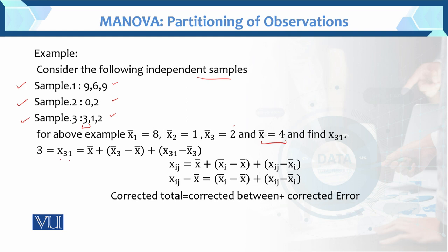Basically, we need to find the sum of squares of deviation from mean. The general case is: xᵢⱼ = x̄ + (x̄ᵢ − x̄) + (xᵢⱼ − x̄ᵢ). So for the general case, xᵢⱼ equals x̄, plus x̄ᵢ minus x̄, plus xᵢⱼ minus x̄ᵢ.